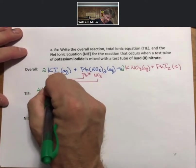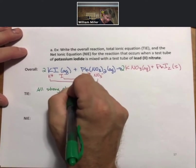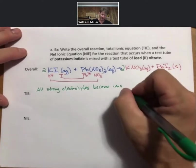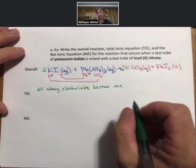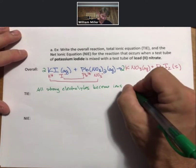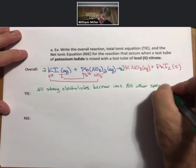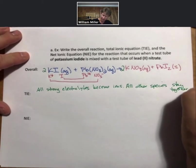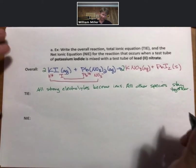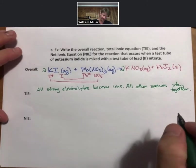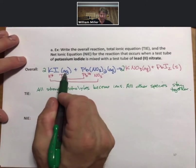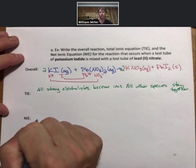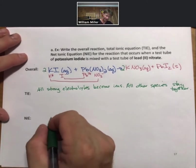All other species stay together, which just means you're not going to break them up into ions. And I'll show you what that means, and we'll talk about this through the next several pages with the examples. Potassium iodide is aqueous, and it is an ionic compound, but therefore it is a strong electrolyte. Strong electrolytes break up 100% into ions.